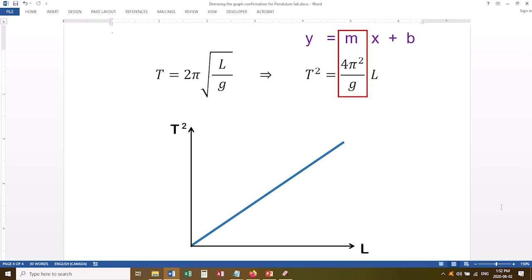You're going to graph your data as T squared versus L, and then you're going to check: is the graph linear within uncertainty? Does the slope equal the value I expected within uncertainty? And does the y-intercept equal the value that I expected within uncertainty?